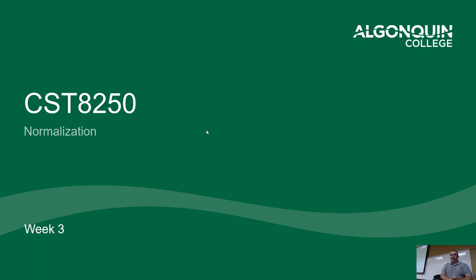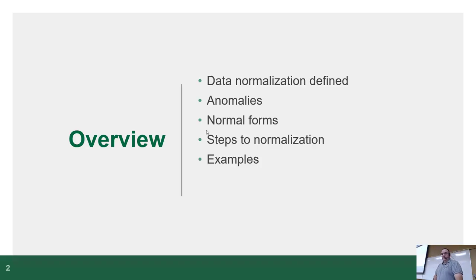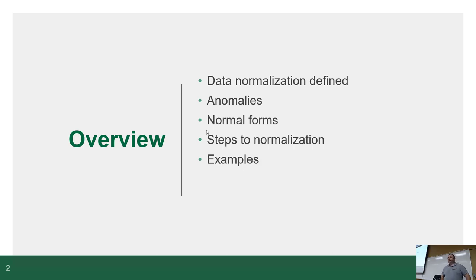Without further ado, I'm going to start with the topic for Week 3, and the topic is Normalization. It's a topic that at its basic level is very simple, yet some people struggle to understand it. It's all about cleaning up your data. I'm going to cover the definition of normalization, what anomalies are — which is the point of normalization, to get rid of anomalies — some of the normal forms, and we'll do an example at the end.